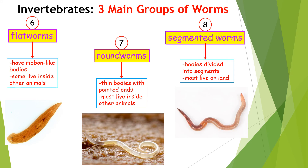Now let's learn about the last three groups of invertebrates, which are the three main groups of worms. Flatworms have ribbon-like bodies; some live inside other animals, such as the planarian. Roundworms have thin bodies with pointed ends and most also live inside other animals, like the nematode. Segmented worms have bodies divided into segments and most live on land, such as the earthworm. So flatworms and roundworms can live inside animals, whereas most segmented worms live on land. Good luck!